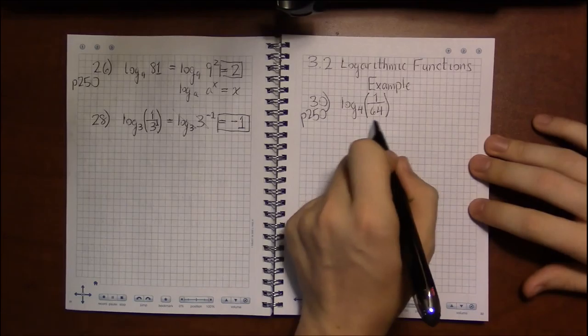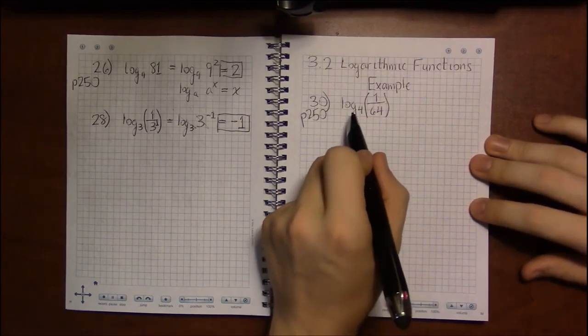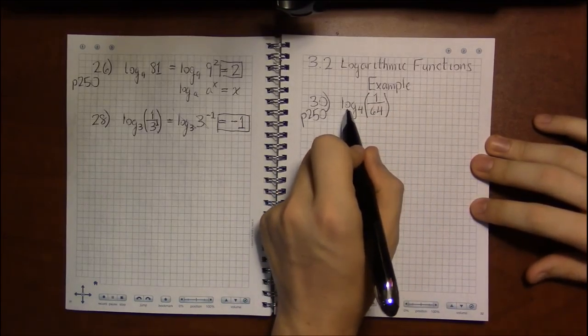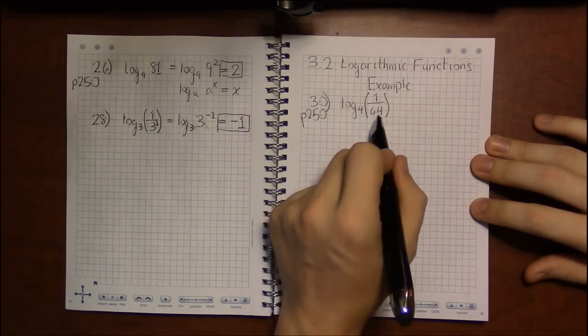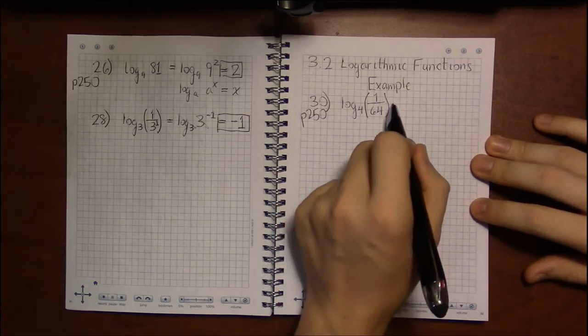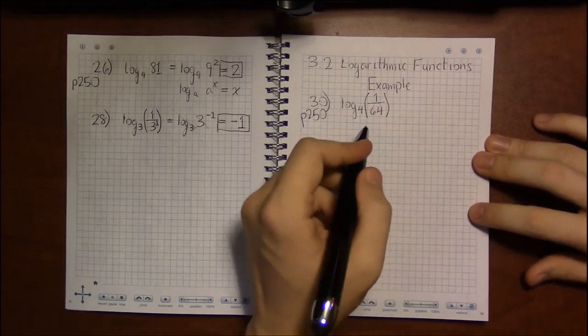Let's look at more examples of using these log properties. So we're asked to reduce log base 4 of 1 over 64 without using a calculator, just using the log properties.